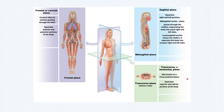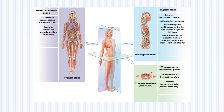The last of the anatomical planes is the transverse or horizontal plane, also known as the cross-sectional plane — shown here as the green line. The purpose of this plane is to separate the body into superior and inferior portions, otherwise known as top and bottom.